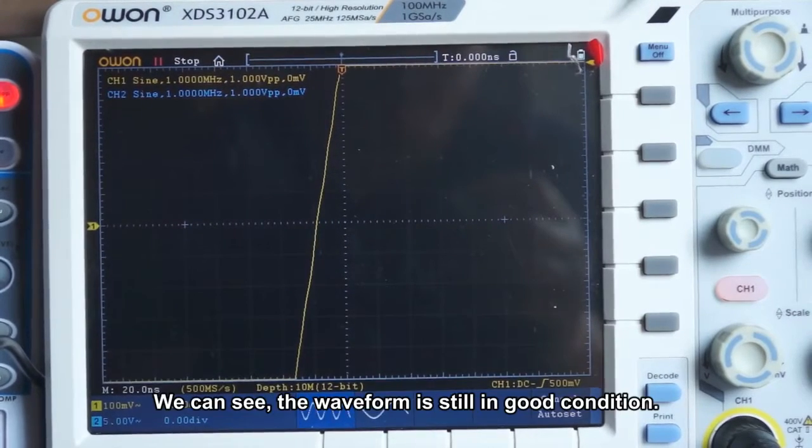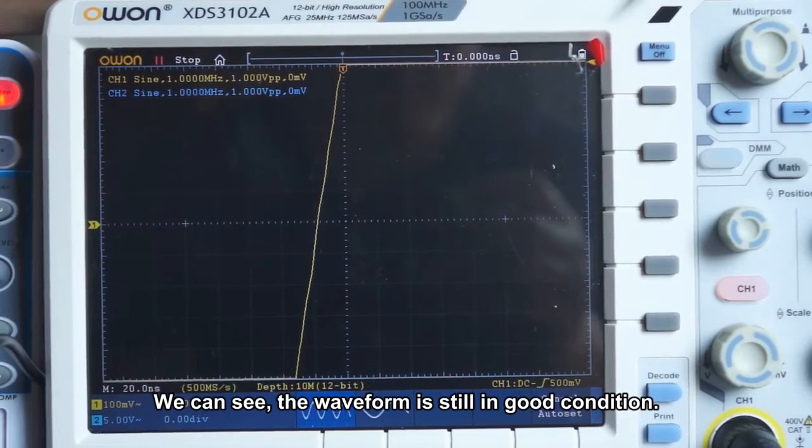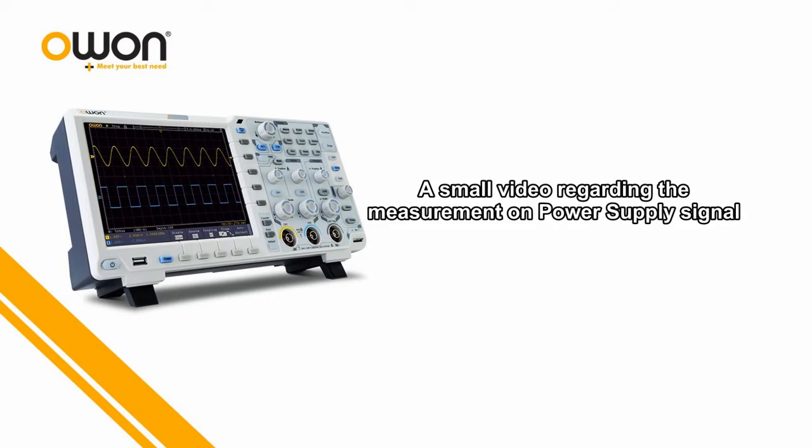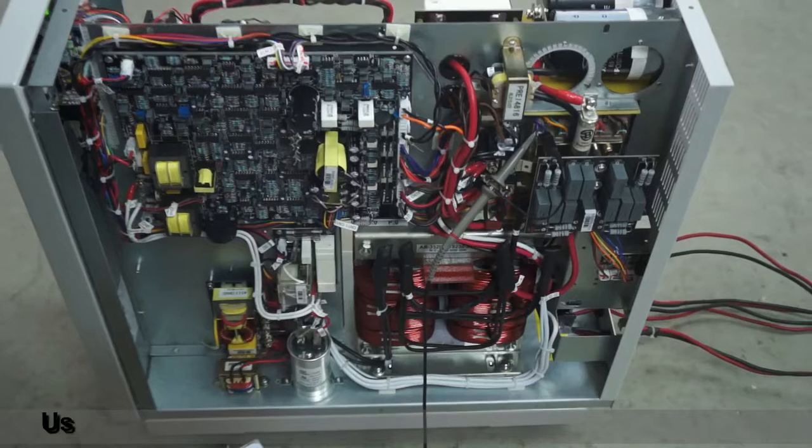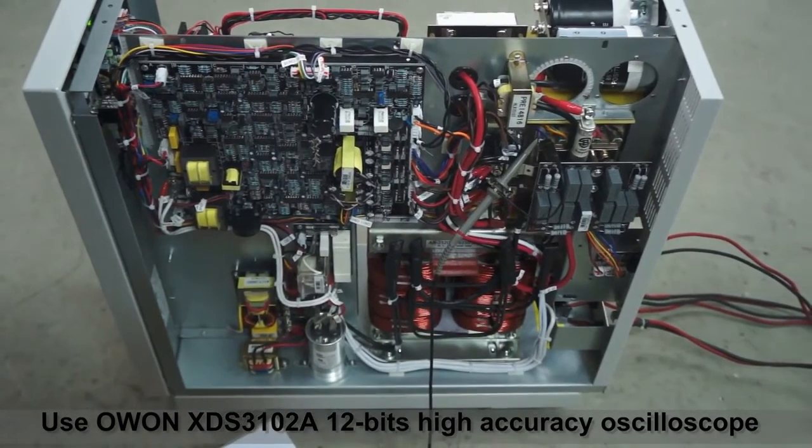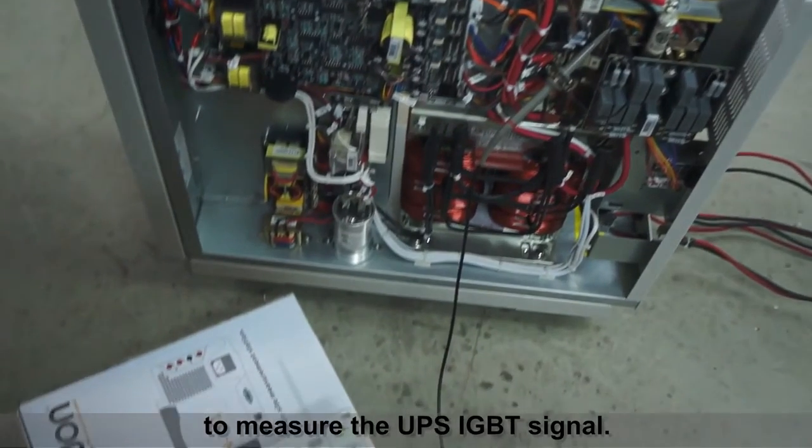You can see the waveform is still in good condition. Now, use OWON XDS3102A 12-bit high-accuracy oscilloscope to measure the UPS-IGBT signal.